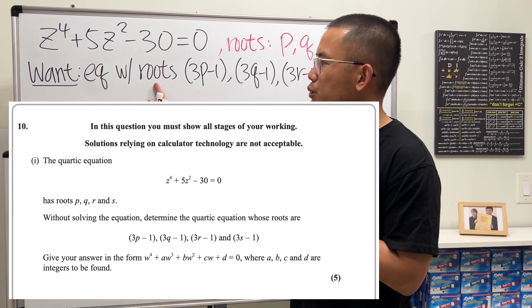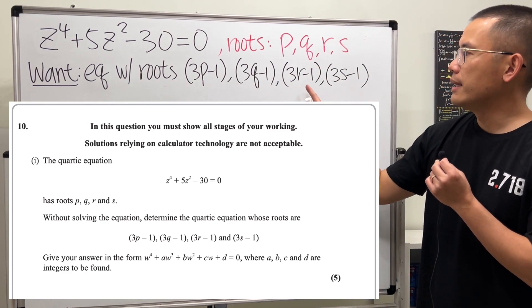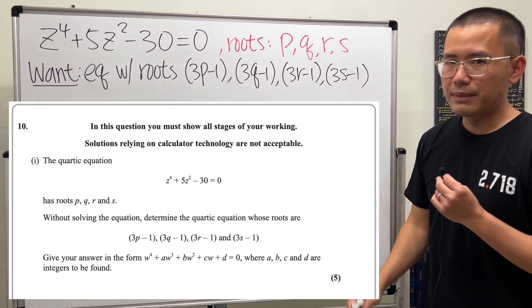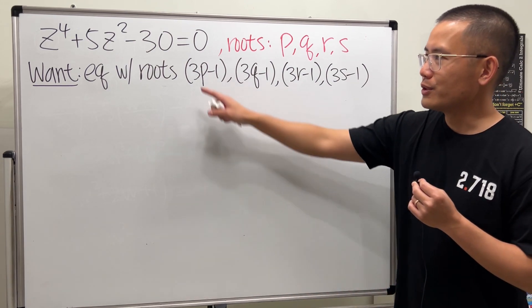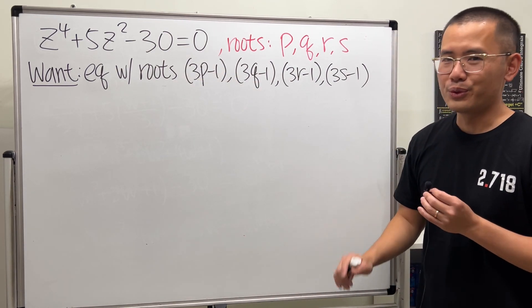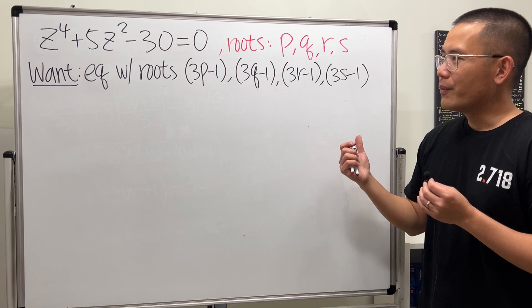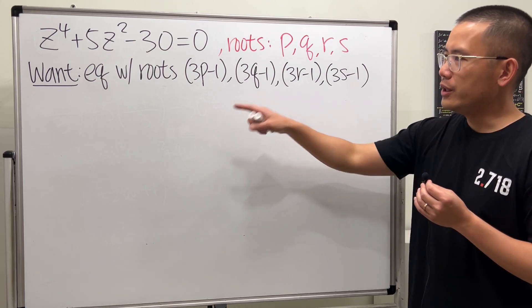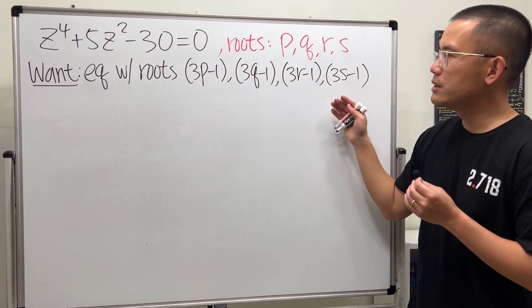But now with roots 3p - 1, 3q - 1, 3r - 1, and 3s - 1. Now, if you want to solve this, no, don't do it. Trust me.